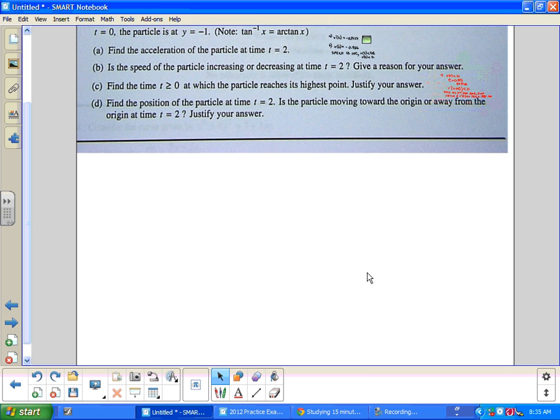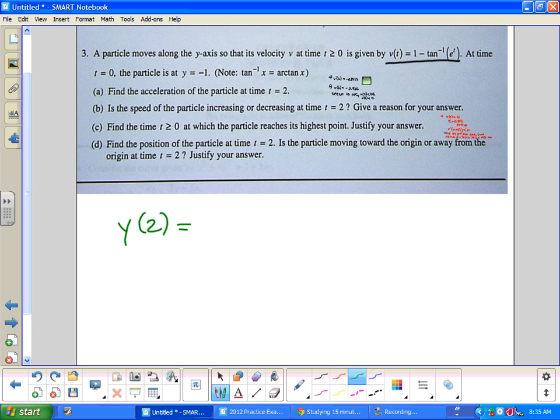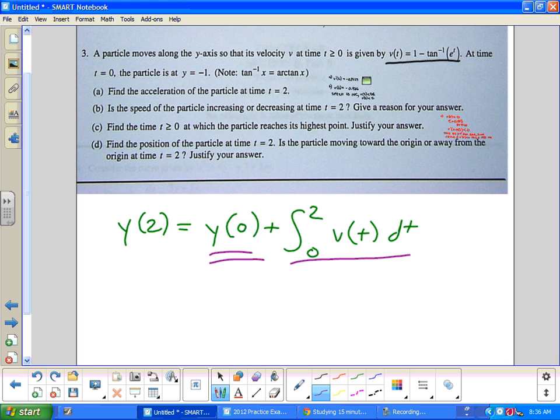Last one. Find the position of the particle at time equals 2. Guys, remember when I started this problem I said this was a fundamental theorem of calculus problem someplace? This one is a fundamental theorem of calculus. They want you to find the position of the particle at time. They want y of 2. Well the only way to get y of 2 is to start at y of 0. Take the integral from 0 to 2 of v of t dt. And I've got to believe this is a point. Actually, this is a point. If you have that written on your paper somewhere, give yourself a point.